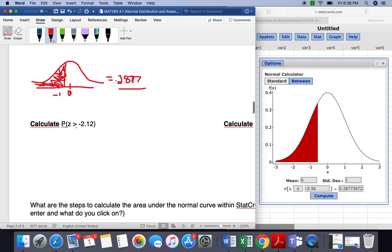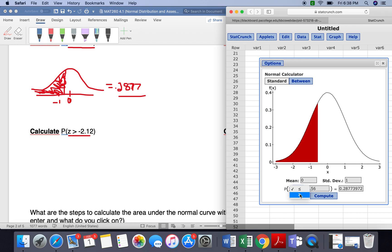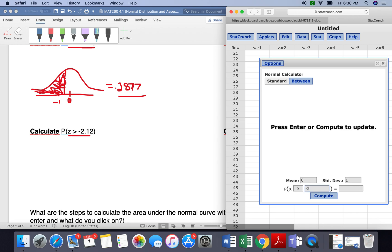So the next one we have is z is greater than negative 2.12. So instead of less than, we want to change this to greater than, and we want to change this to negative 2.12.